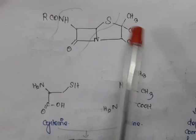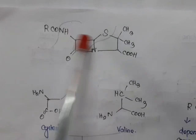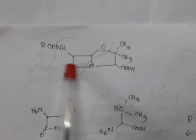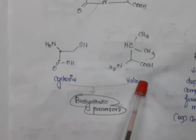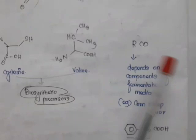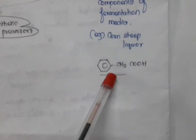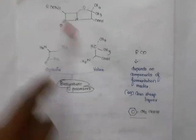We can divide the penicillin structure to identify its biosynthetic precursors. One part — with CH(CH₃)₂ and COOH and NH₂ — is valine. Another part — with SH, CH₂, CH, NH₂, COOH — is cysteine. So cysteine and valine are the two biosynthetic precursors for penicillin. The acyl (R-CO) side chain depends on the fermentation medium; for example, corn steep liquid is high in phenylacetic acid, which provides the benzyl group, giving benzyl penicillin.